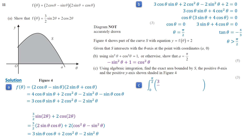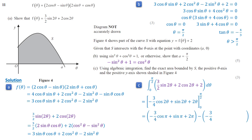Moving on to part C, the shaded region is calculated by the integral of f(θ) + 2 with respect to θ, between the limits 0 and pi over 2. Integration gives negative 3 over 4 cos 2θ plus sine 2θ plus 2θ. Substituting the limits and solving gives the final result: 3 over 2 plus 2pi, which represents the area of the shaded region.